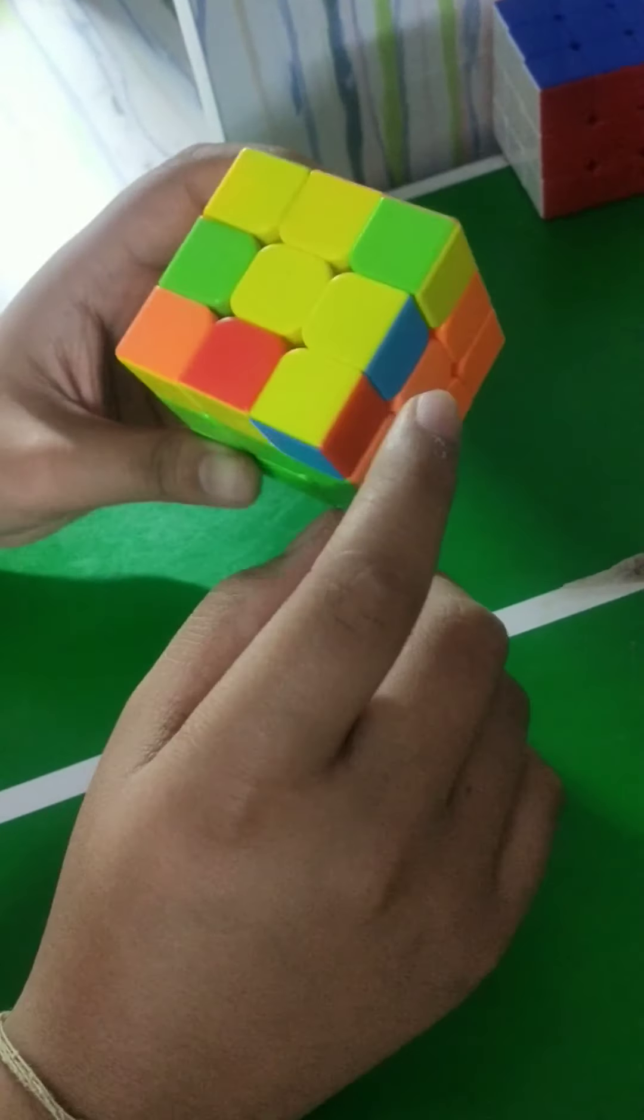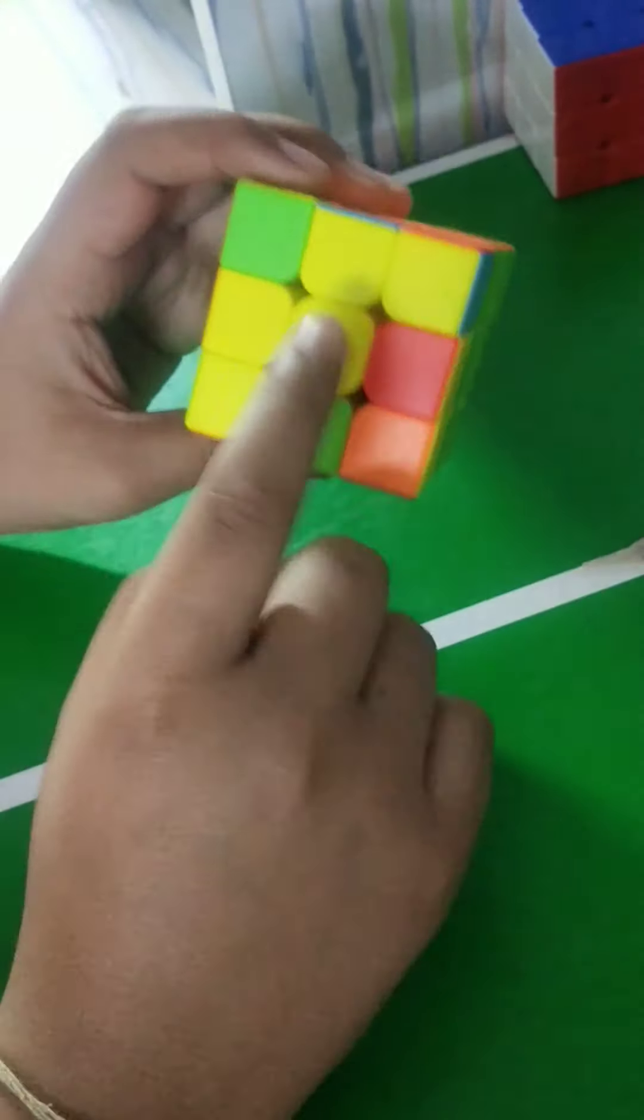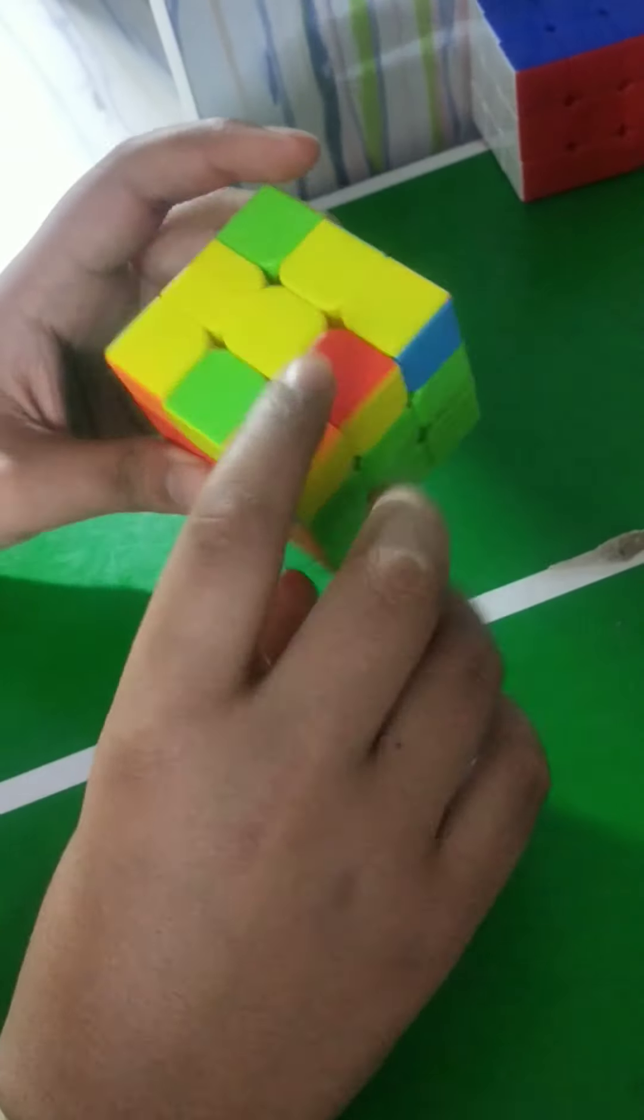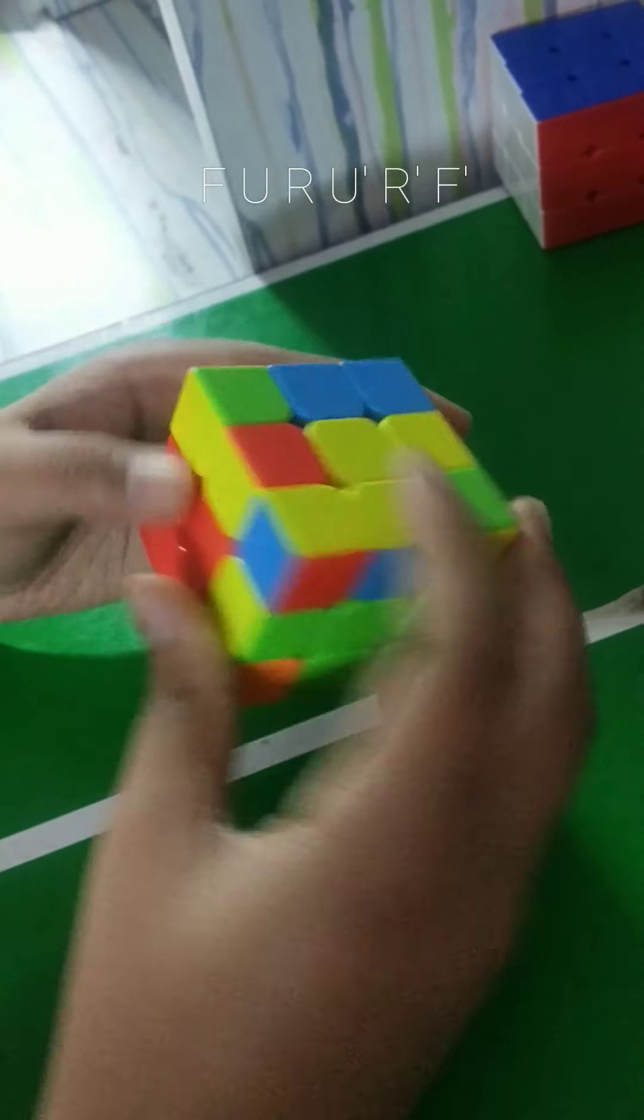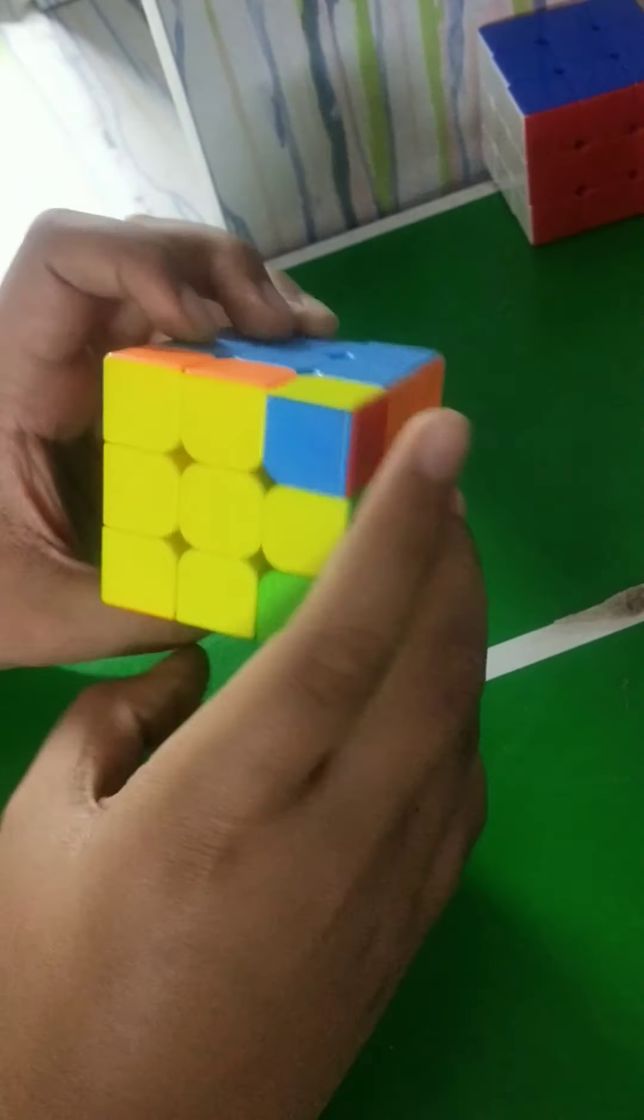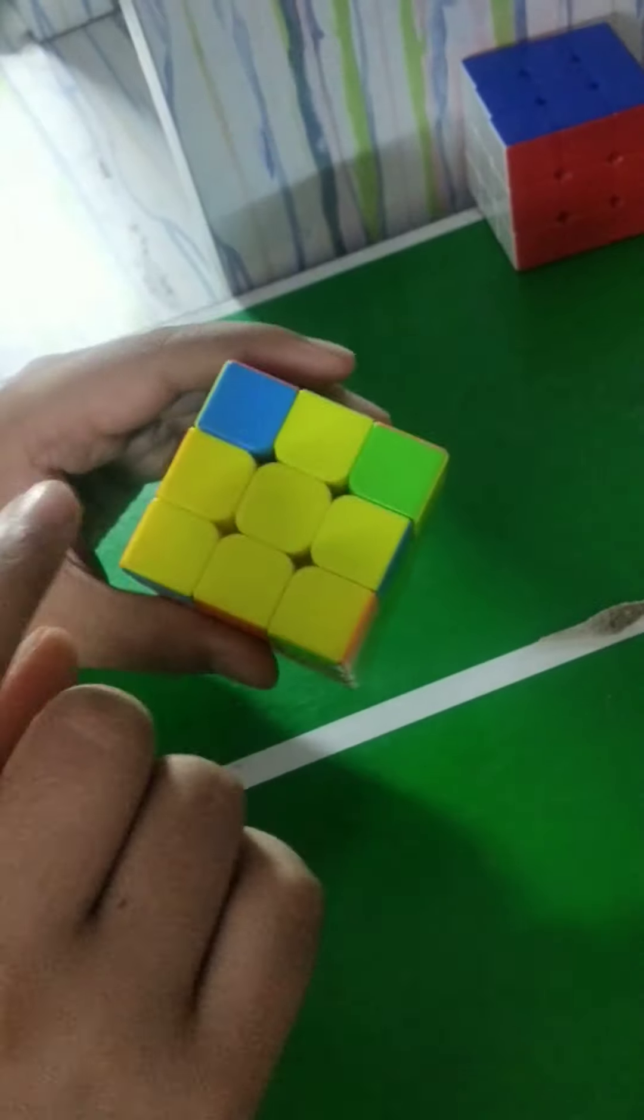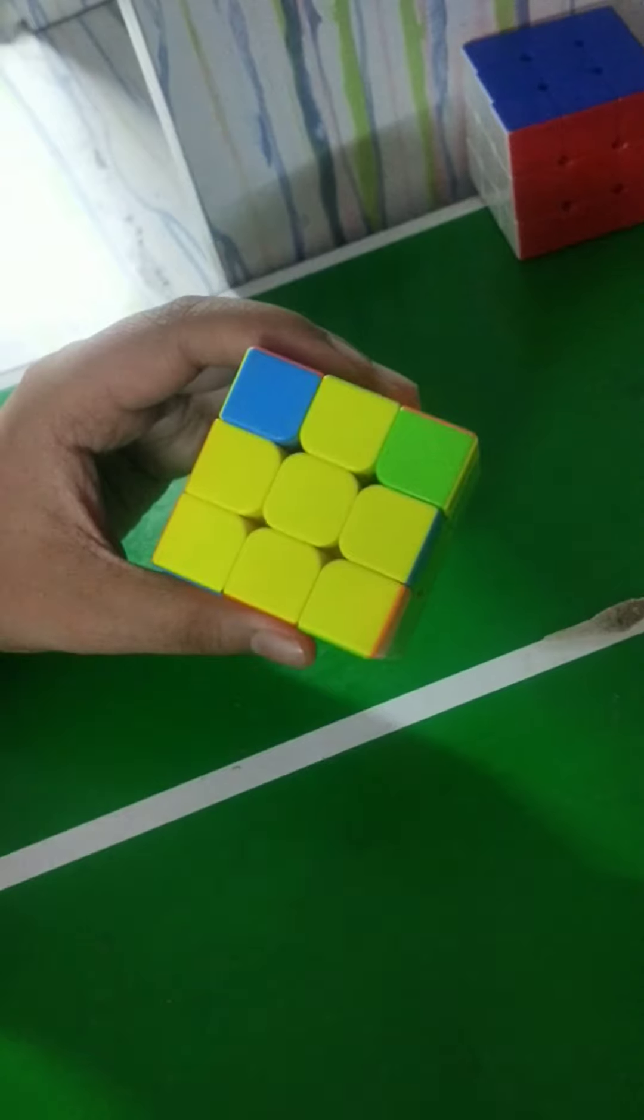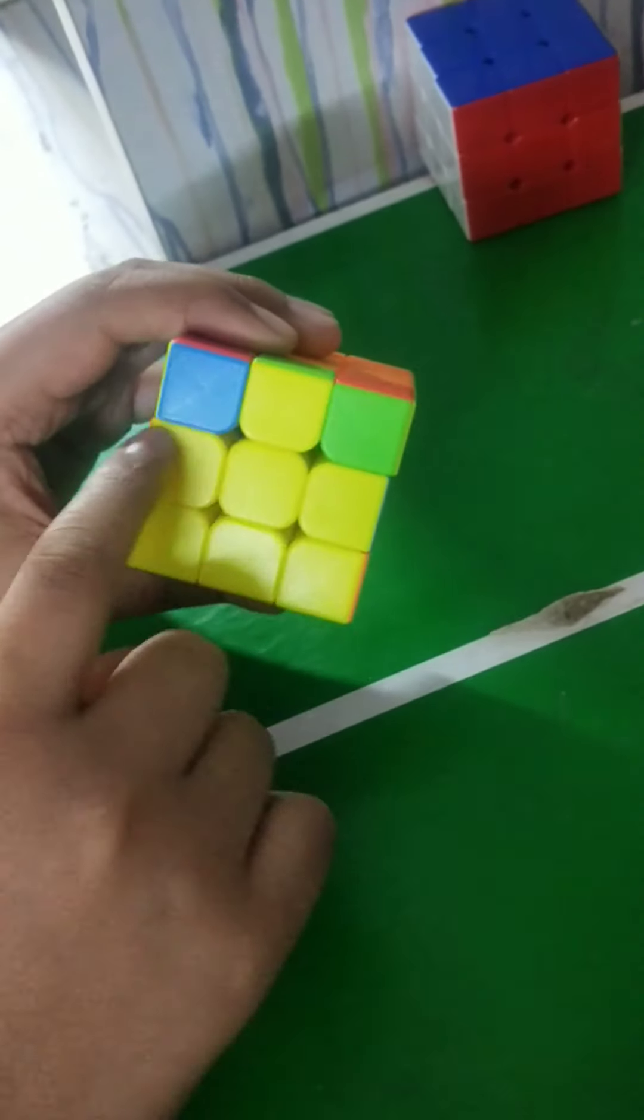The third step is to solve the yellow side. You have to solve the nine o'clock yellow parts. Once you've got this, you put F U R U R prime F prime. There you go. Now you can make the yellow nine o'clock by the same algorithm. Once you've got the nine o'clock, you can solve the yellow cross. You've got the yellow cross.